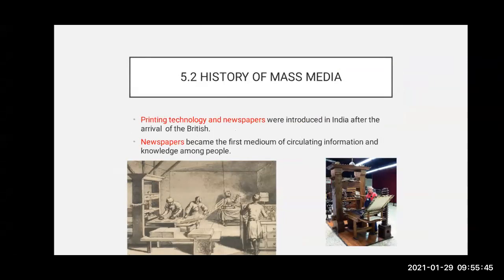History of Mass Media: Printing technology and newspapers were introduced in India after the arrival of the British. Once the British arrived in India, they introduced printing technology. People started receiving printed news through newspapers. You can see in the picture: printing presses and the printing of newspapers going on. Newspaper became the first mass medium of circulating information and knowledge among the people.